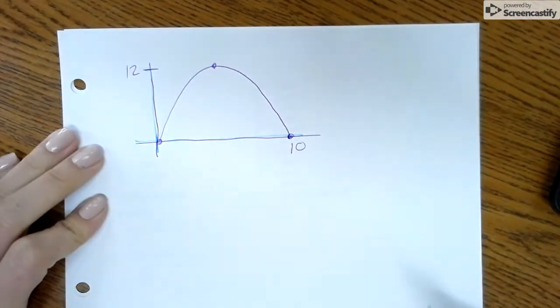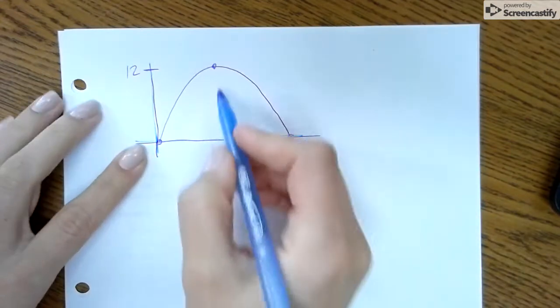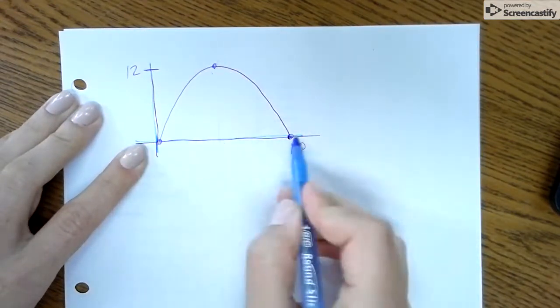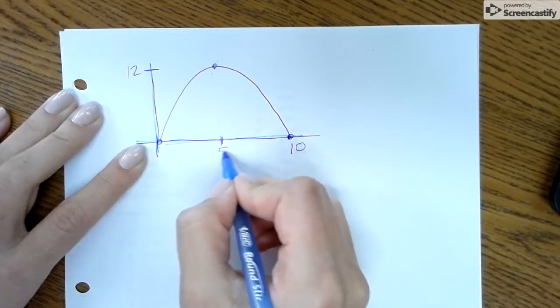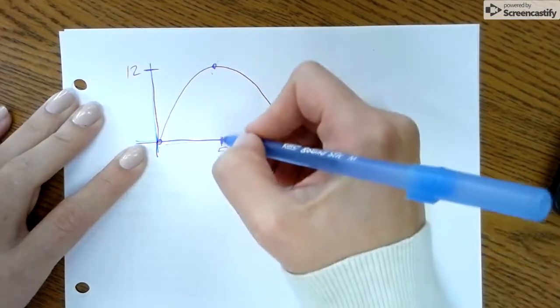So at this point, you have to be able to figure out what your vertex is. Hopefully we know that the vertex is centered between the x-intercepts. So I'm going to say it went 10, so the center of that is 5. So the vertex is (5, 12).